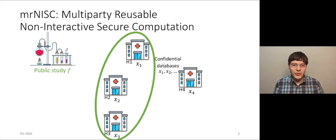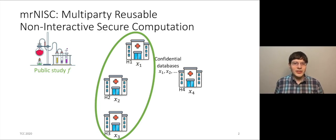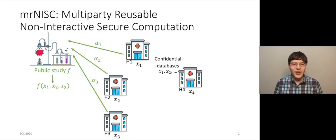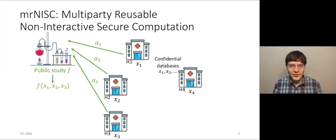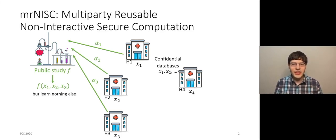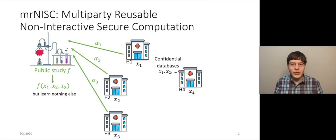Unfortunately, X1, X2, and X3 are confidential, so the hospitals cannot just reveal them. Instead, what we would like is that the hospitals can compute and publish some messages, or computation encoding alpha1, alpha2, alpha3, such that from this computation encoding, anyone can compute the output of the function F on X1, X2, and X3. Importantly, this computation encoding should not leak anything more than F of X1, X2, X3, and in particular, it should not allow anyone to learn any single medical record.